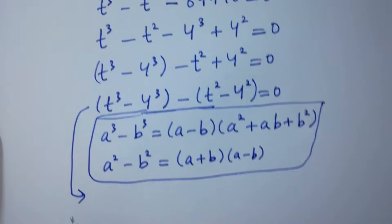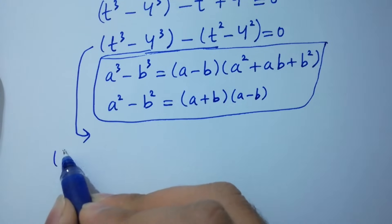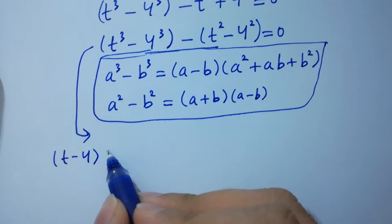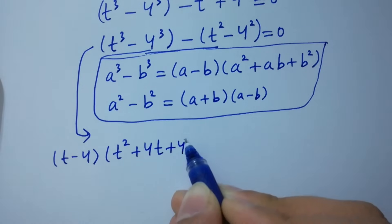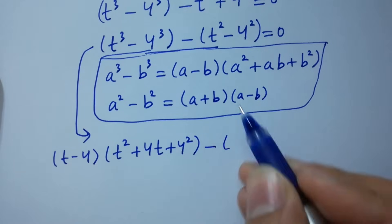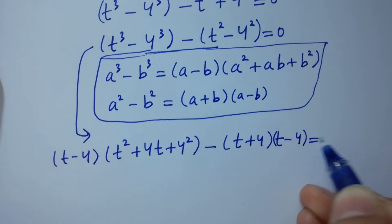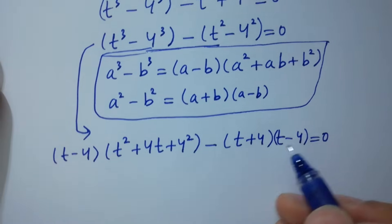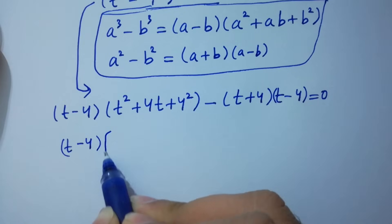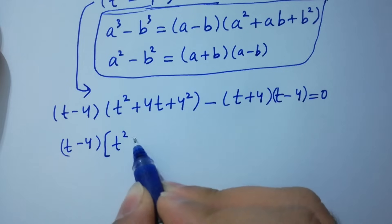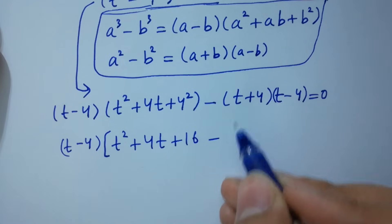Applying these identities, it equals (t minus 4)(t squared plus 4t plus 16) minus (t squared minus 16), which is (t plus 4)(t minus 4), equals zero. Here, t minus 4 can be factored out, giving t squared plus 4t plus 16 minus (t plus 4).